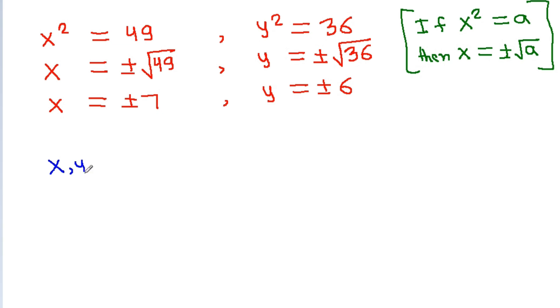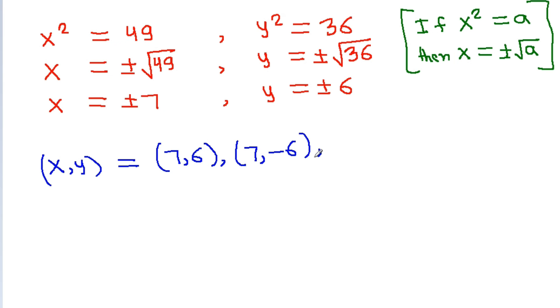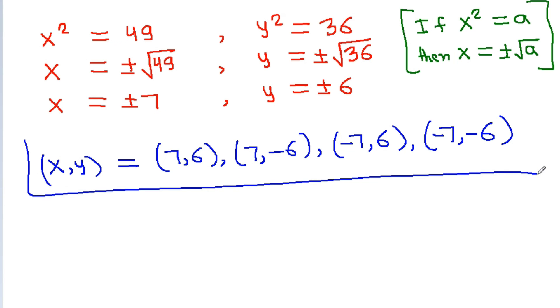Therefore x equals plus or minus 7 and y equals plus or minus 6. So the pairs (x, y) can be: (7, 6), (7, −6), (−7, 6), and (−7, −6).